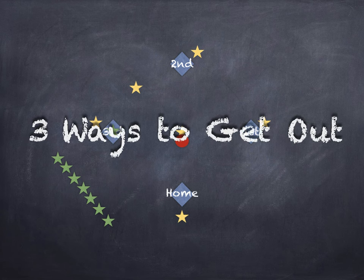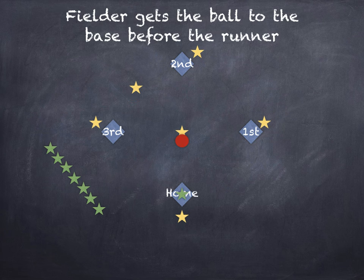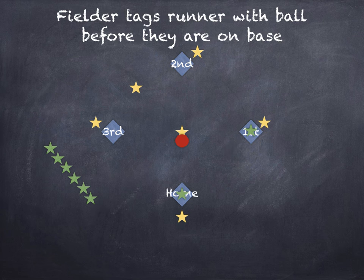There are 3 ways to get out in kickball. First, if somebody catches the ball before it touches the ground, you're out. Second, if one of the fielders gets the ball to the base you're going to before you do, you're out. Third and last, if you get tagged with the ball while you're not on a base, you're out.